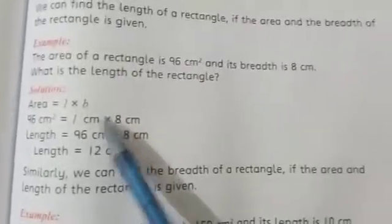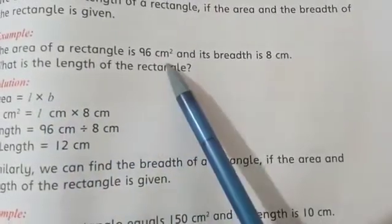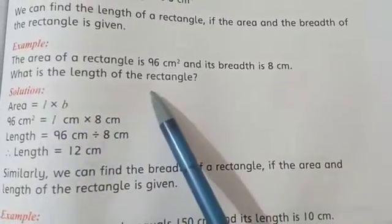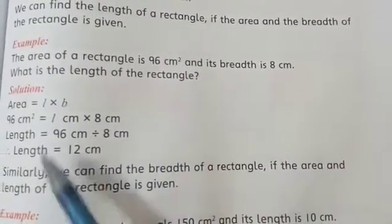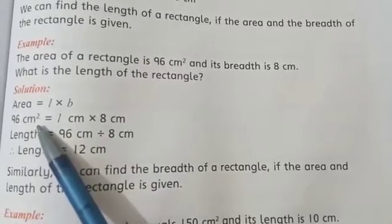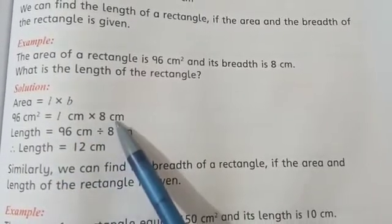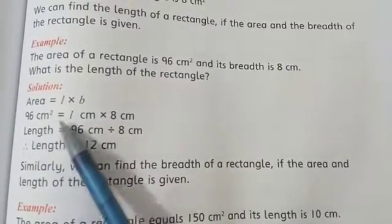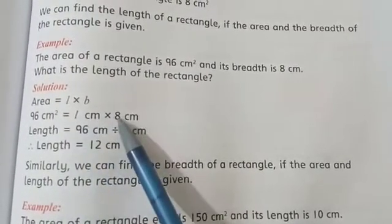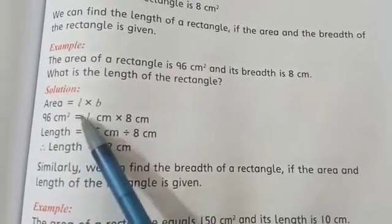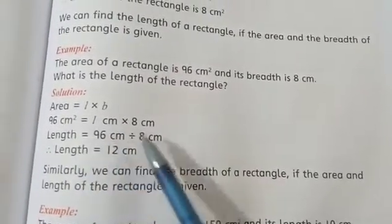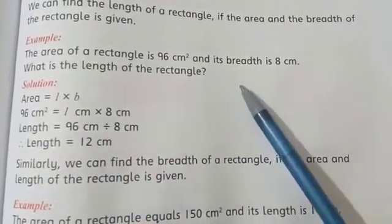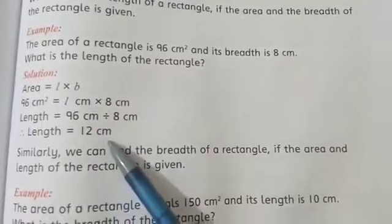Now look at this example. The area of a rectangle is 96 cm² and its breadth is 8 cm. What is the length of the rectangle? Now you find out the length. Area given is 96 cm². And breadth given is 8 cm. Length is not given. What do we do? We will shift it. So here we will multiply it. And this equals, it will divide. 96 divided by 8 equals 12 cm. So the length of that rectangle will be 12 cm.